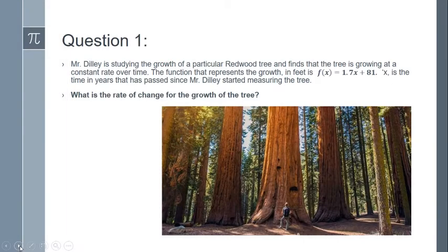Alright, let's get started with question one. Mr. Dilley, that's me, is studying the growth of a particular redwood tree and finds that the tree is growing at a constant rate over time. The function that represents the growth in feet is f(x) equals 1.7x plus 81.